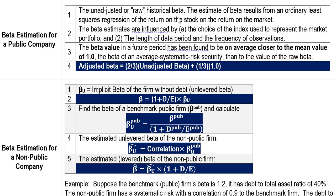Using historical data to estimate the raw beta — which is unadjusted — the estimate results from an ordinary least-squares regression of the stock's return on the market index return. It's a regression using both the individual asset's return and the market index return. Be careful: the raw data is unadjusted, so there are some statistical problems.